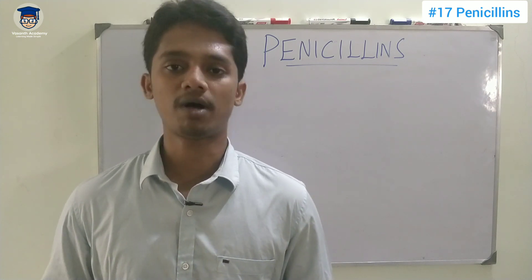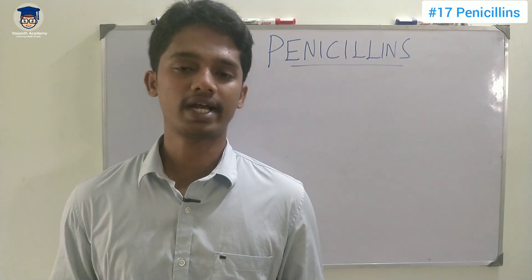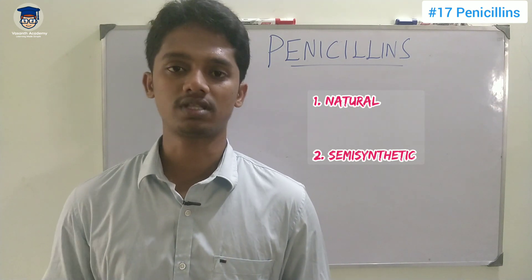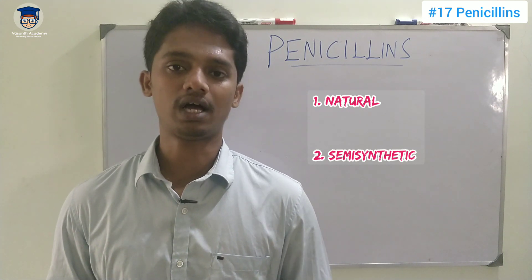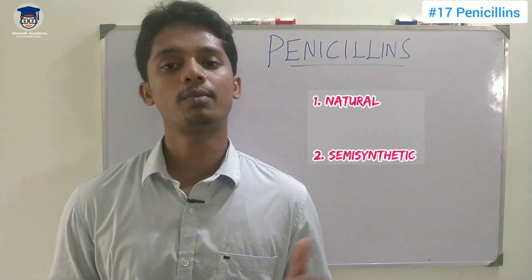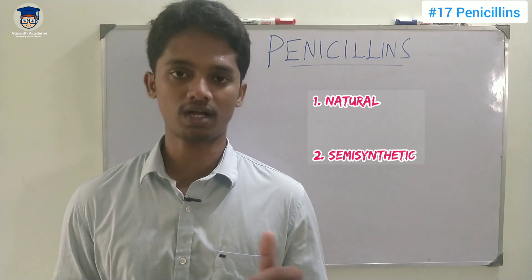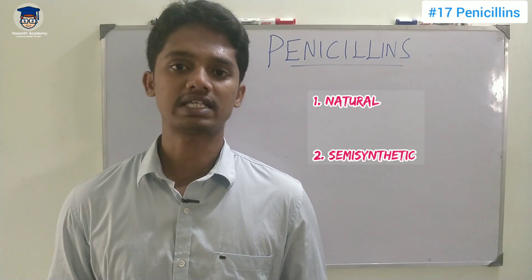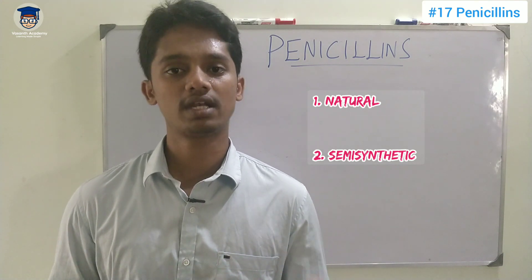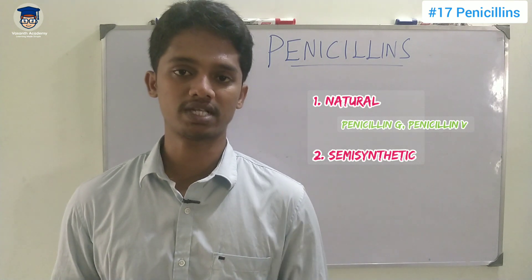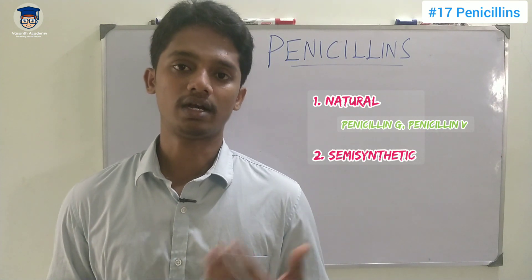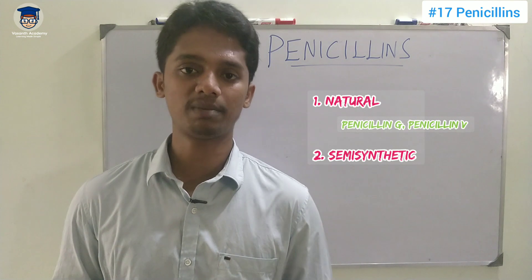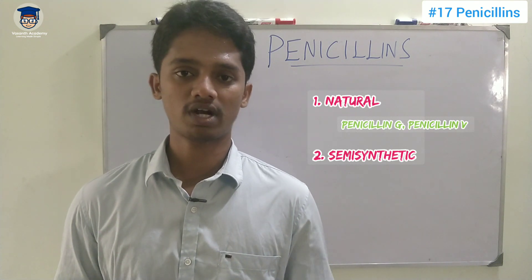We will talk about this pharmacology-wise. Penicillin has two categories: one is natural, and one is semi-synthetic. If you look at the natural category, from Penicillium notatum and Penicillium chrysogenum, we get two drugs directly. Penicillin G is benzylpenicillin, and Penicillin V is phenoxymethyl penicillin. So those are the two natural drugs.